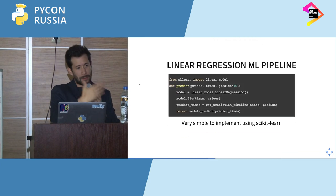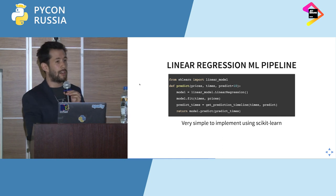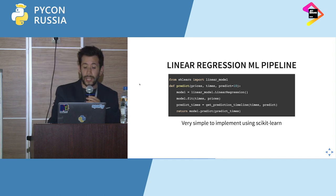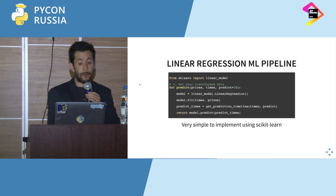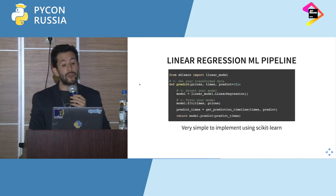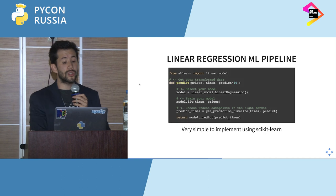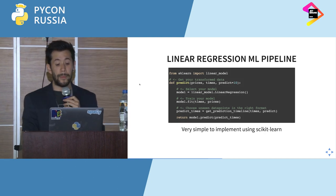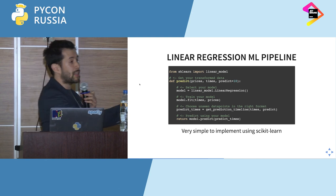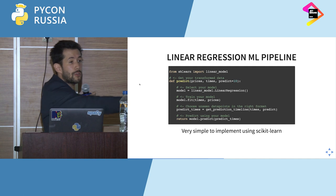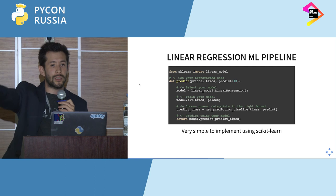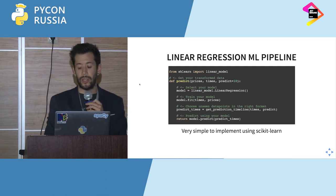Now to actually build our pipeline for linear regression, let's take a scikit-learn example. In this prediction function, we get our transformed data, select the model — in this case linear regression — train it, and then choose the unseen data points we want to predict. We predict them by giving the input and getting an output. In this case, we want to predict the next 10 points in the future. With a linear model, you take all the cryptocurrency data and extrapolate: what are the next 10 days going to look like?